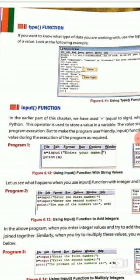In the earlier part of this chapter, we have used equals to sign which is known as an assignment operator in Python. This operator is used to store a value in a variable. The value stored in a variable can be changed during the program execution. But to make the program user friendly, the input function is used which allows the user to enter the value during the execution of the program as required.